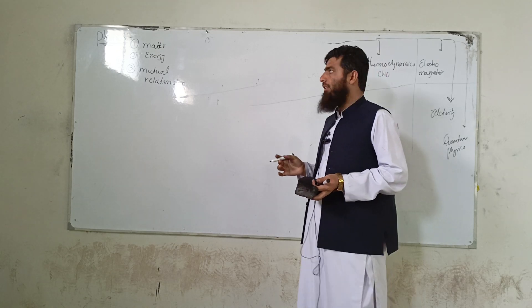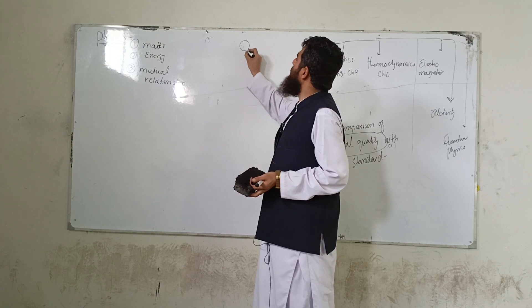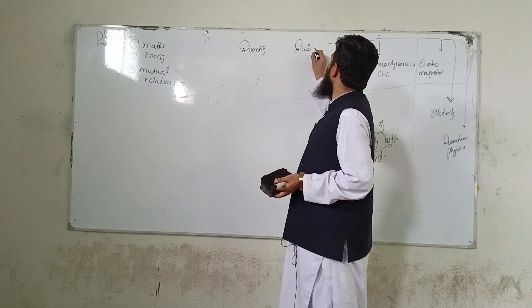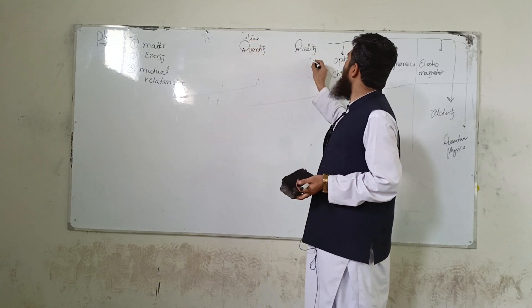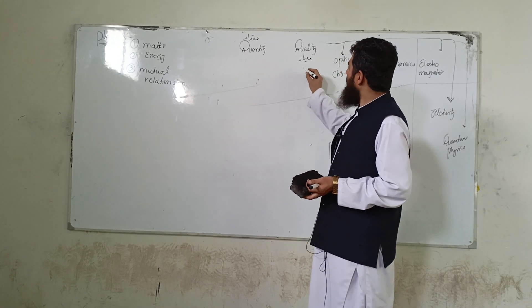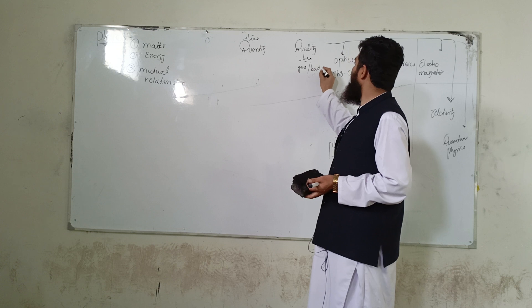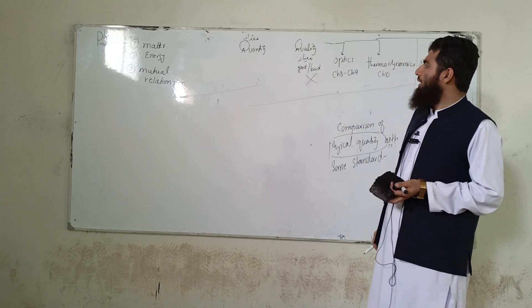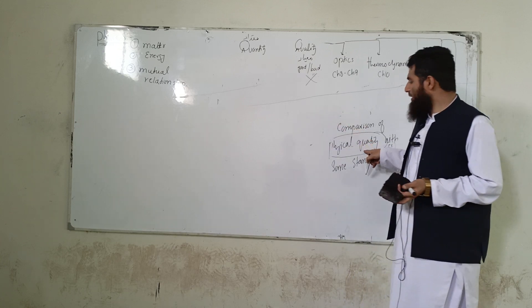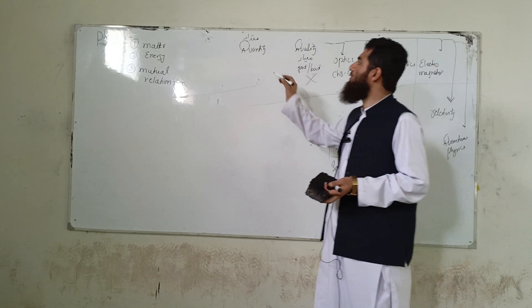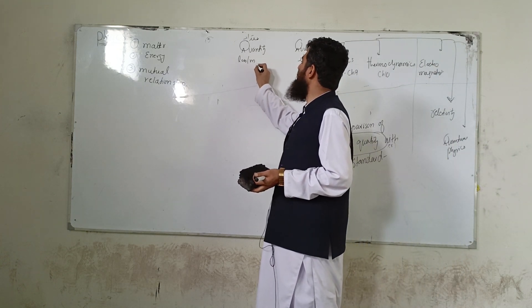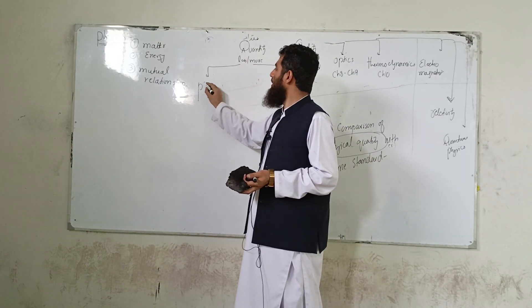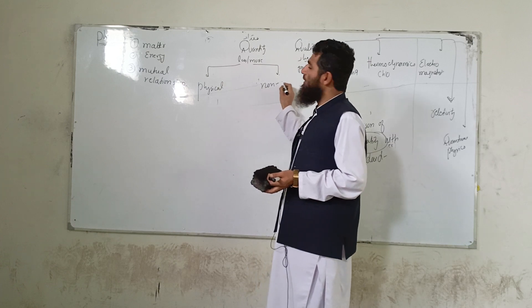ساتھ ساتھ آپ لوگ notes بناتے جائیں۔ ہمارے پاس normally دو چیزیں ہوتی ہیں: ایک quantity اور دوسری quality۔ Quantity کا مطلب ہے مقدار اور quality کا مطلب ہے معیار — کوئی چیز کتنی اچھی یا بری ہے۔ Quality سے ہمارا زیادہ لینا دینا نہیں۔ ہمارا target physical quantity ہے جو quantity کی category میں آتی ہے۔ Quantity کا مطلب ہے less or more amount of a substance۔ Quantity دو طرح کی ہے: ایک physical اور دوسری non-physical۔